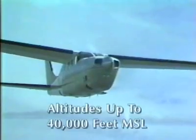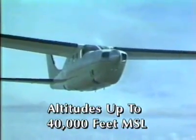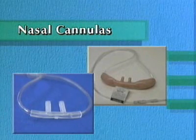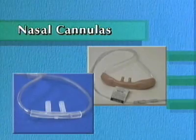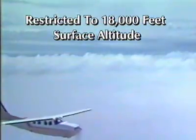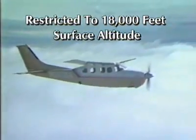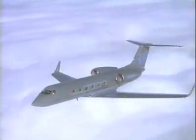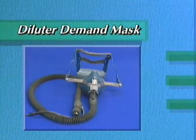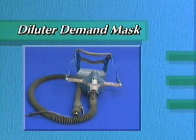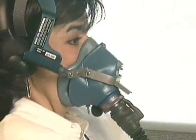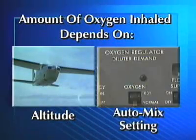The user does not rebreathe any exhaled air. With the proper flow rate, the phase sequential mask will supply adequate oxygen for a short-duration emergency at altitudes up to 40,000 feet MSL. Nasal cannulas are also continuous flow devices and offer the advantage of being more comfortable. They are restricted by federal aviation regulations to 18,000 feet surface altitude because blood oxygen saturation levels can decrease if one breathes through the mouth or talks too much during flight. With increased aircraft technology and altitude ceilings, two additional masks were developed. The diluter demand mask is designed to facilitate an air and oxygen-tight seal to the face, with the amount of oxygen inhaled dependent upon the altitude and the setting of the auto-mix lever.